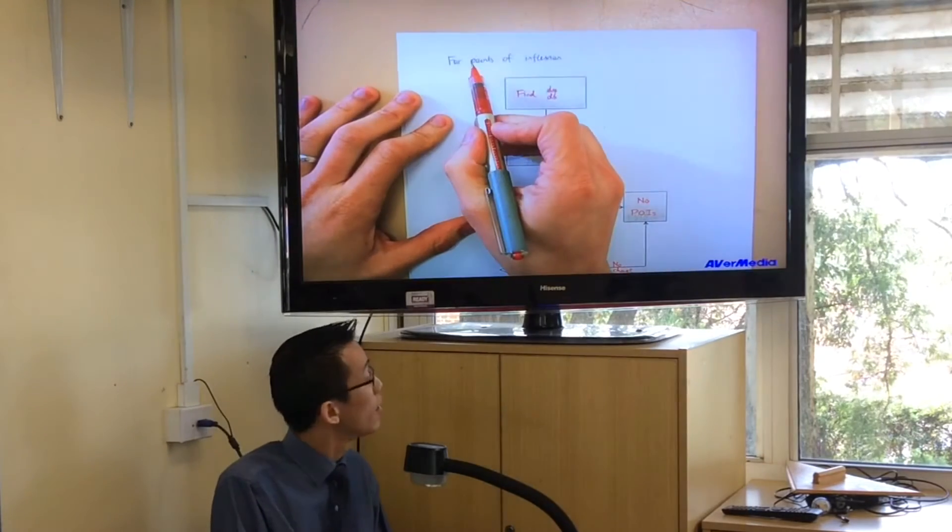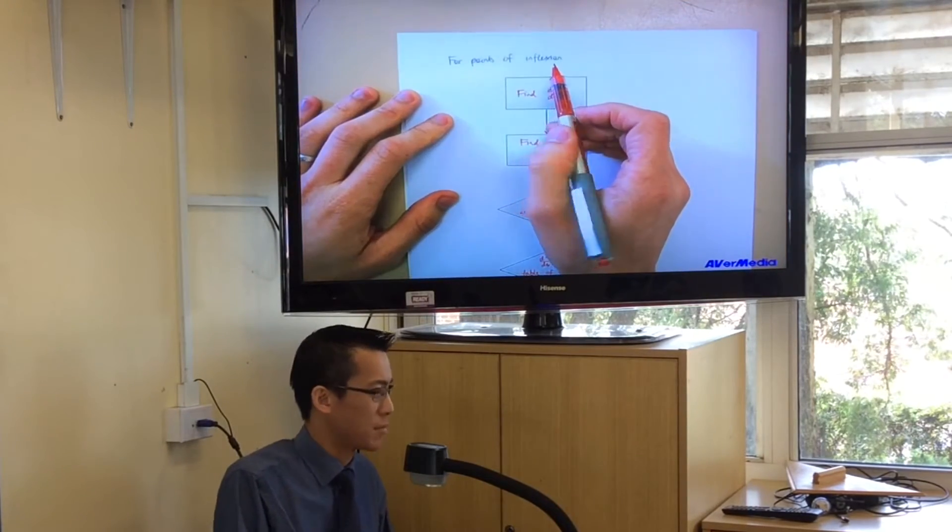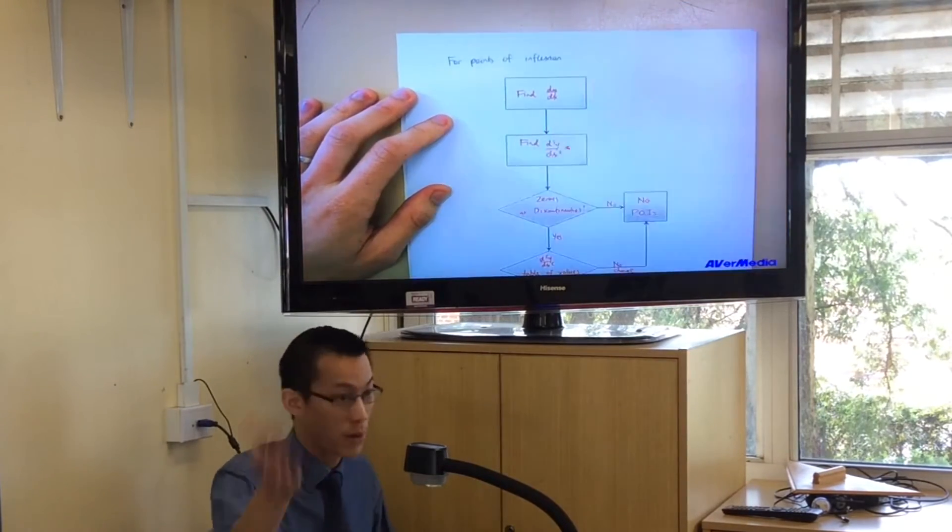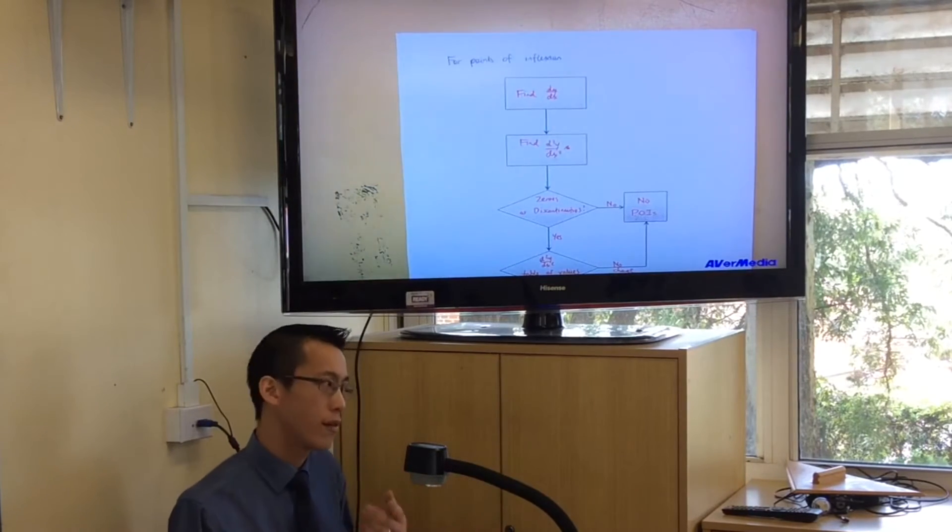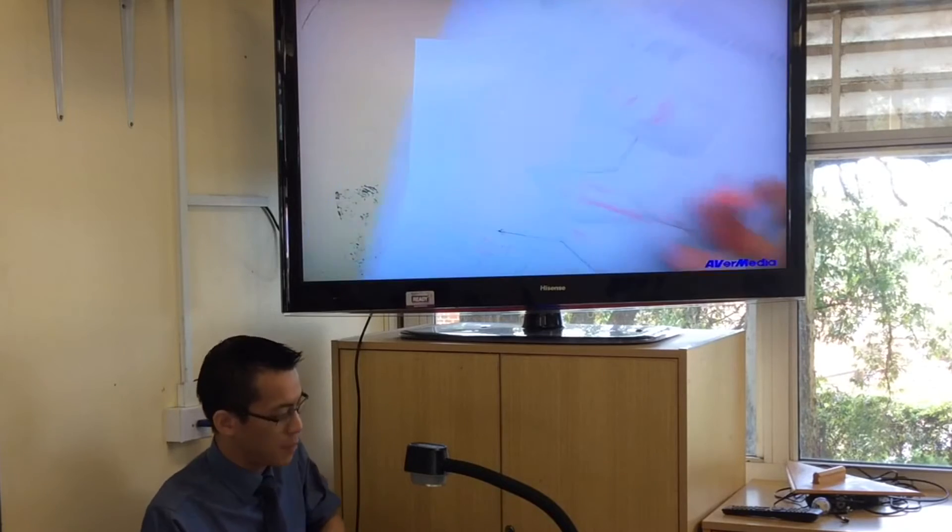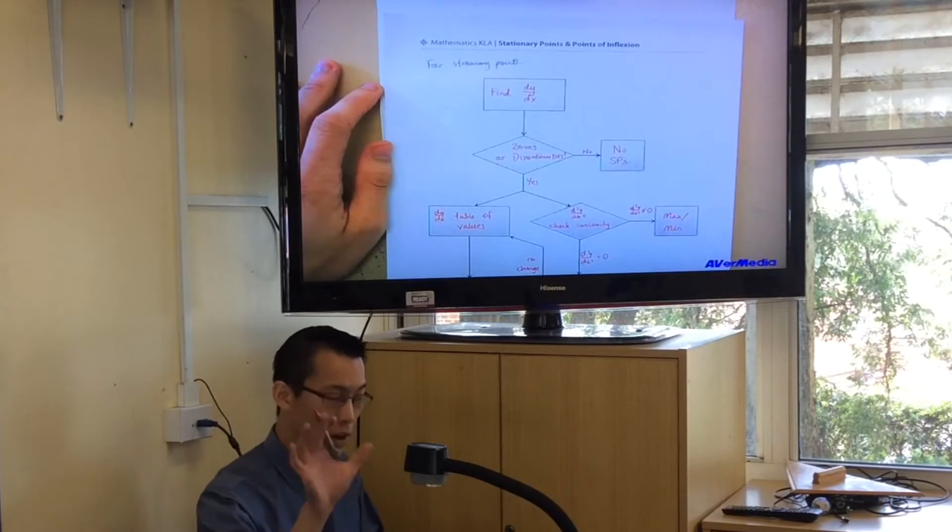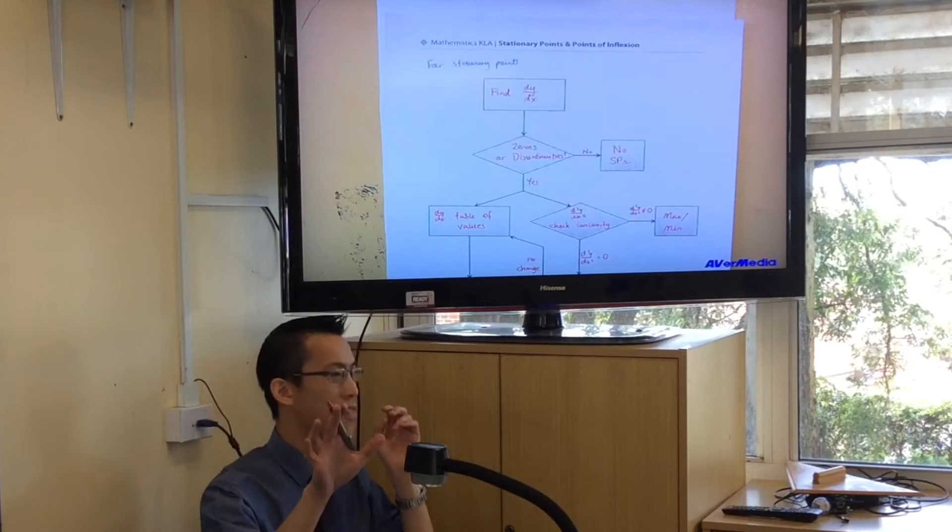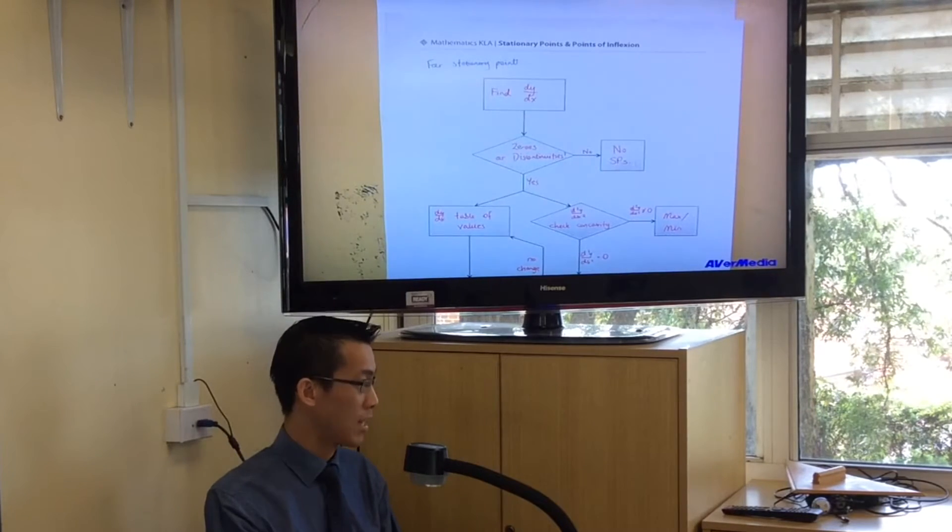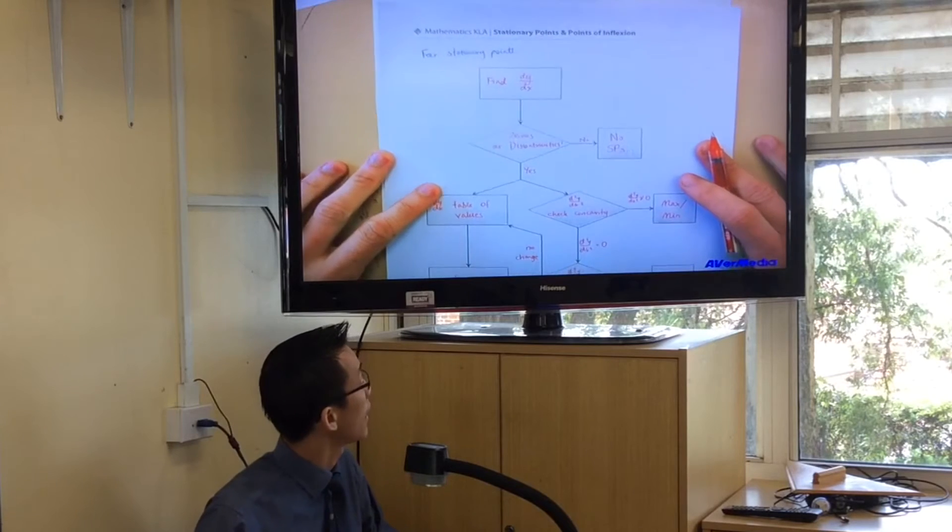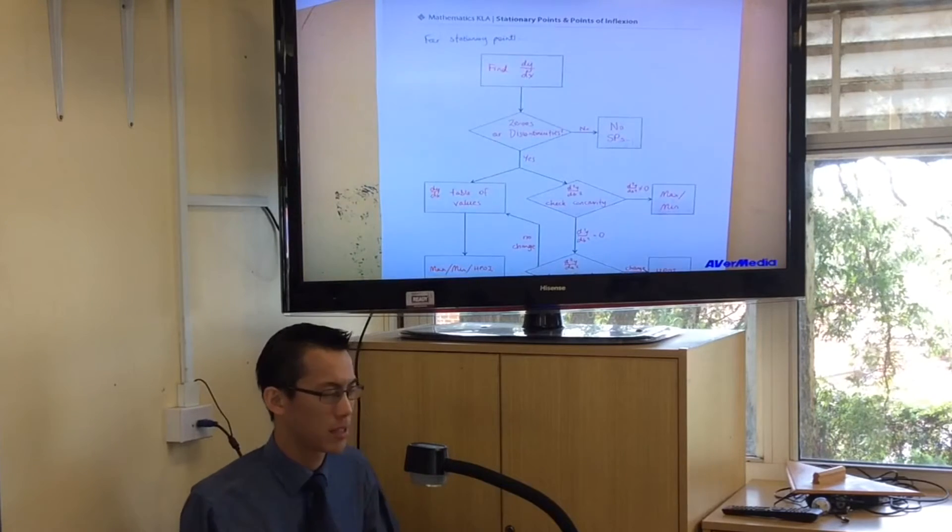However, if the question was just find the points of inflection, it doesn't matter whether it's horizontal or not. The question of whether it's a horizontal point of inflection is really a question that gets answered back here with stationary points. Because first you'll find it's a stationary point, then you'll find max or min or horizontal point of inflection. So that's why this is rather more complicated because there's more things to find.